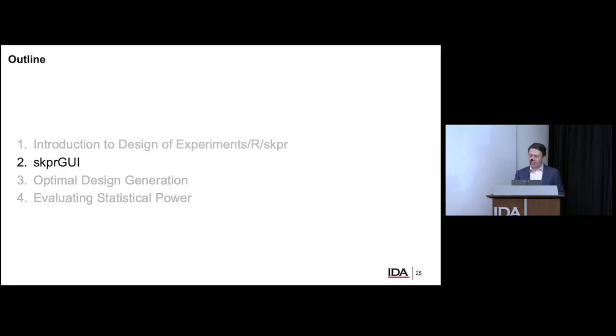Okay, that's it for the GUI. Now let's talk about optimal design generation. We kind of went through that a little bit in the GUI, but now we're going to dive into some concrete examples with code.